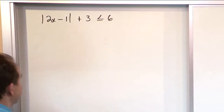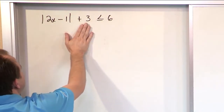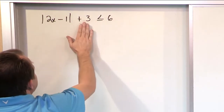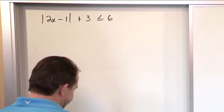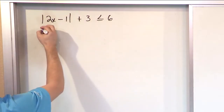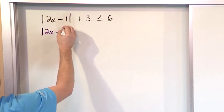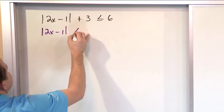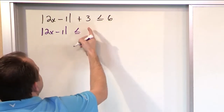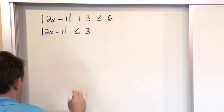The first thing you want to do before you do anything else is move everything other than the absolute value to the other side. So we want to get rid of the 3 by subtracting 3. On the left you'll be left with 2x minus 1, less than or equal to — 6 minus 3 gives us 3 on the right-hand side.